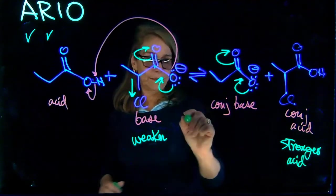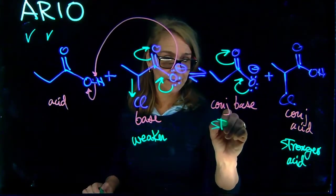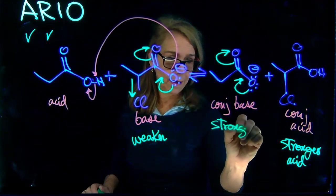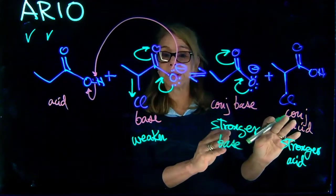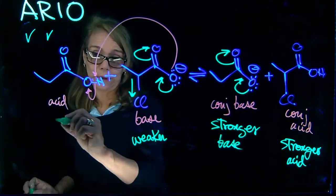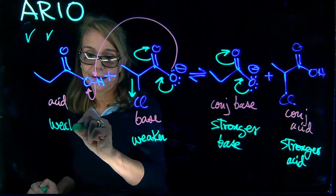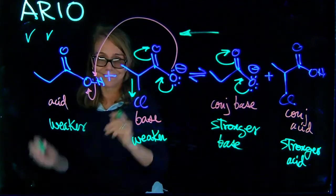And that means that weaker base, that's the stronger base than the other, right? And we know that the equilibrium is going to be shifted to the weaker acid, weaker base. So this is my weaker acid. That means the equilibrium favors this side.